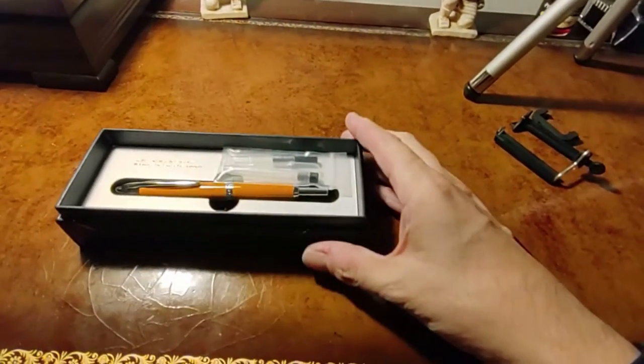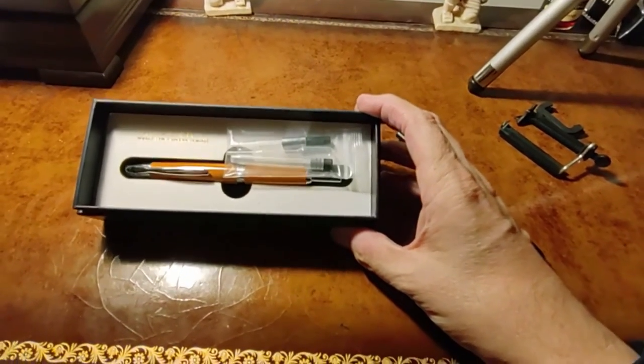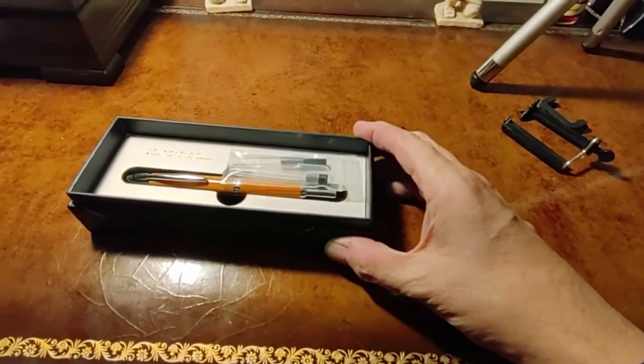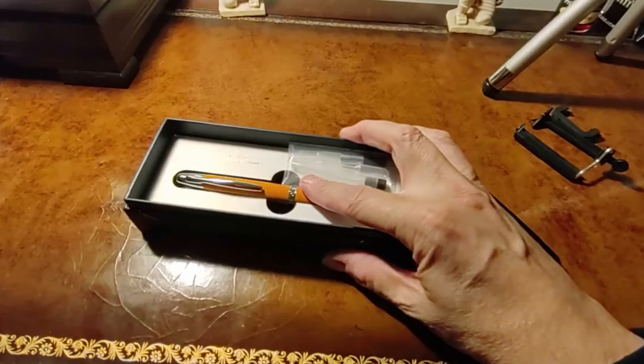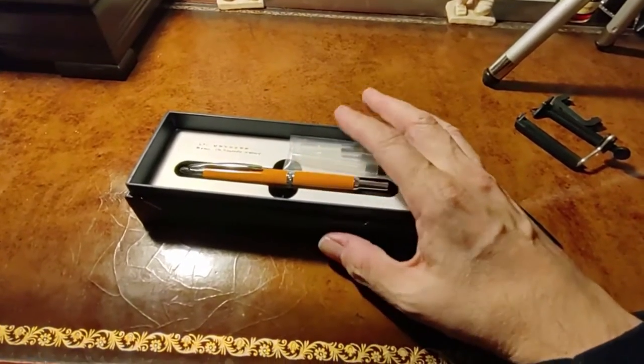Kind of neat. I already had the Moonman yellow or orange, depending on how you want to define your colors, with the clip, but I haven't inked this one yet.